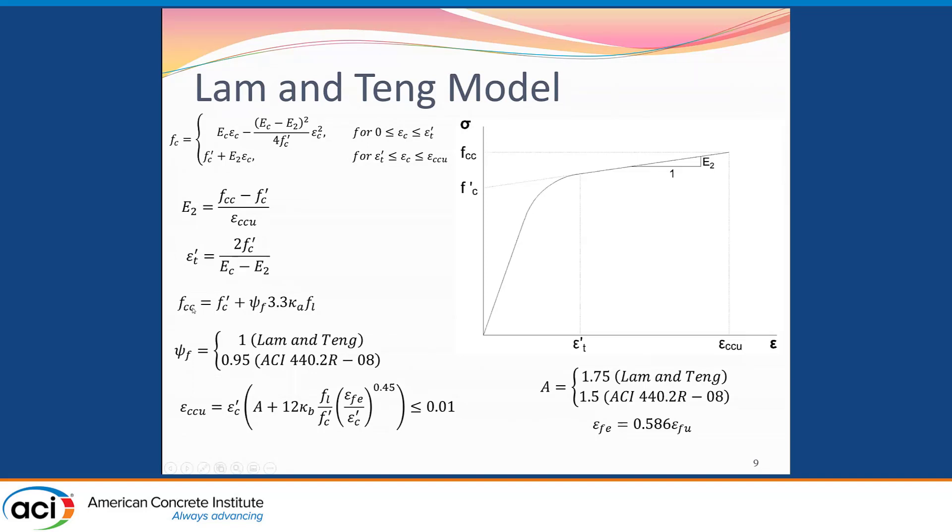As you can see here, to determine the confined strength, you plug in into this equation, which has the kappa A factor. And to determine the ultimate strain, you plug in the kappa B factor. Once you have this model and all the parameters, you can determine the stress at every strain level.